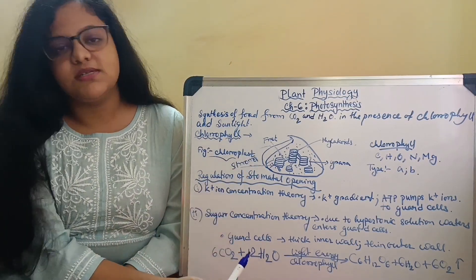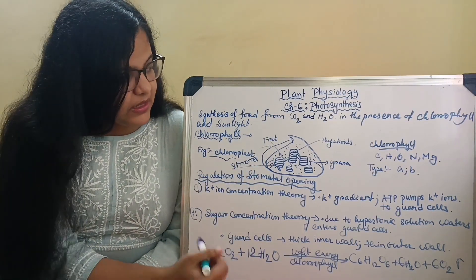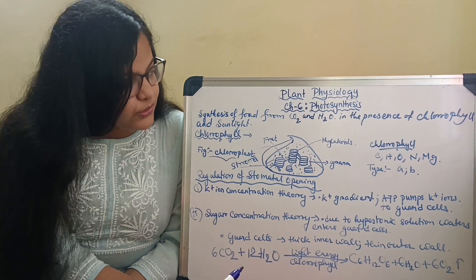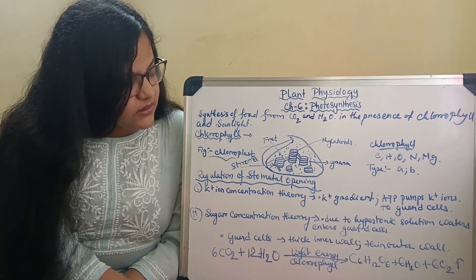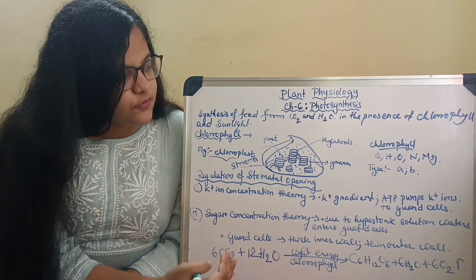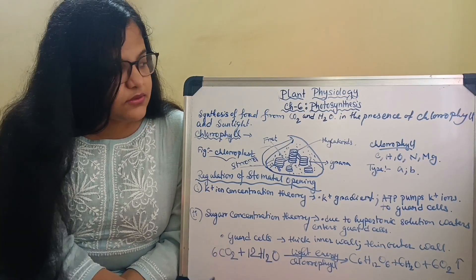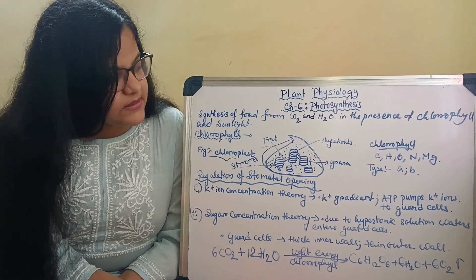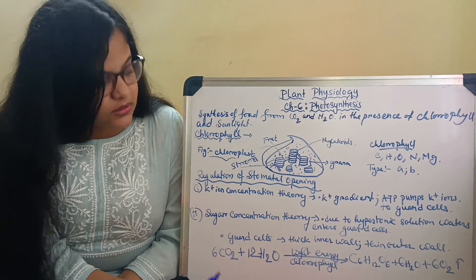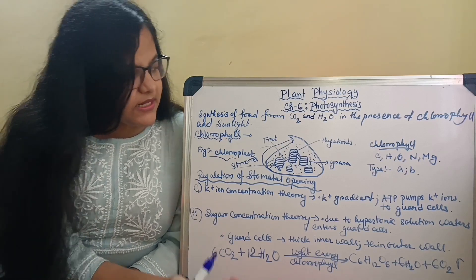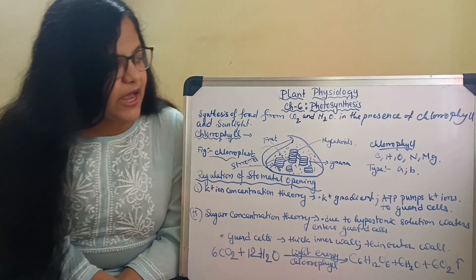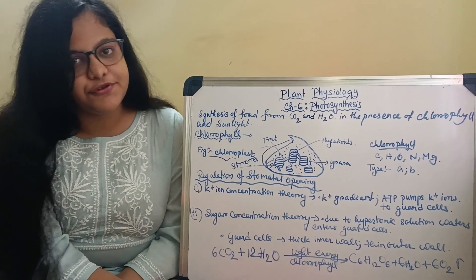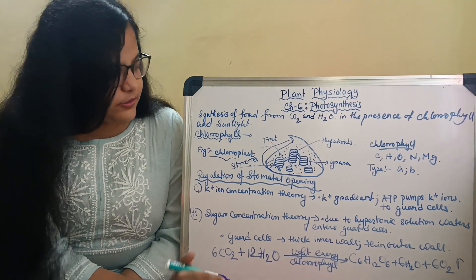What is it called? Fret. Now we need to know what the chlorophyll contains. The pigment chlorophyll contains elements like carbon, hydrogen, oxygen, nitrogen and magnesium.